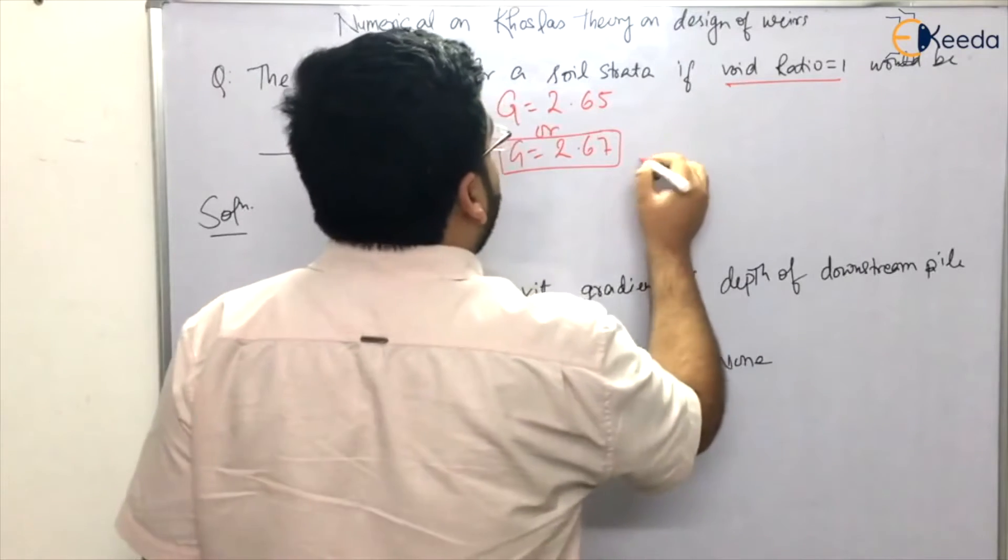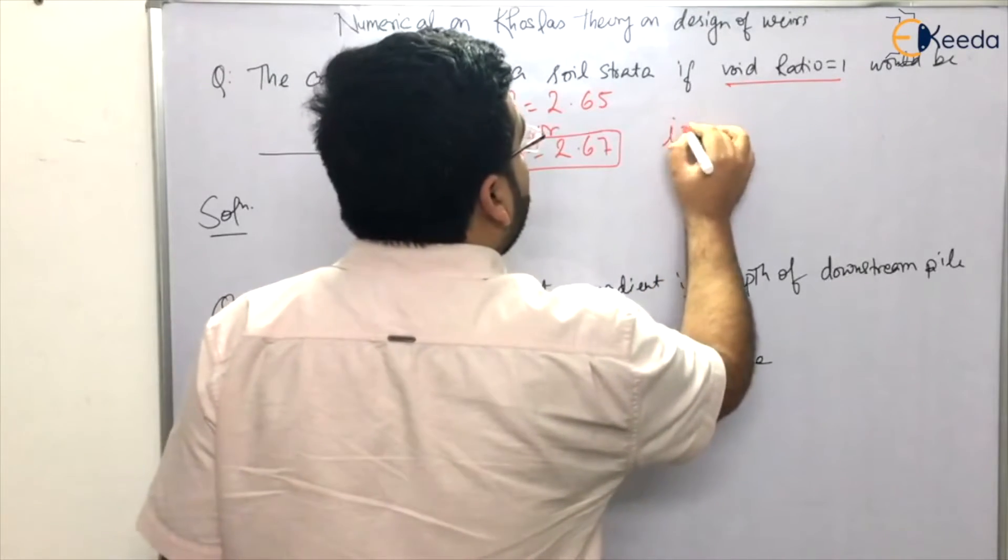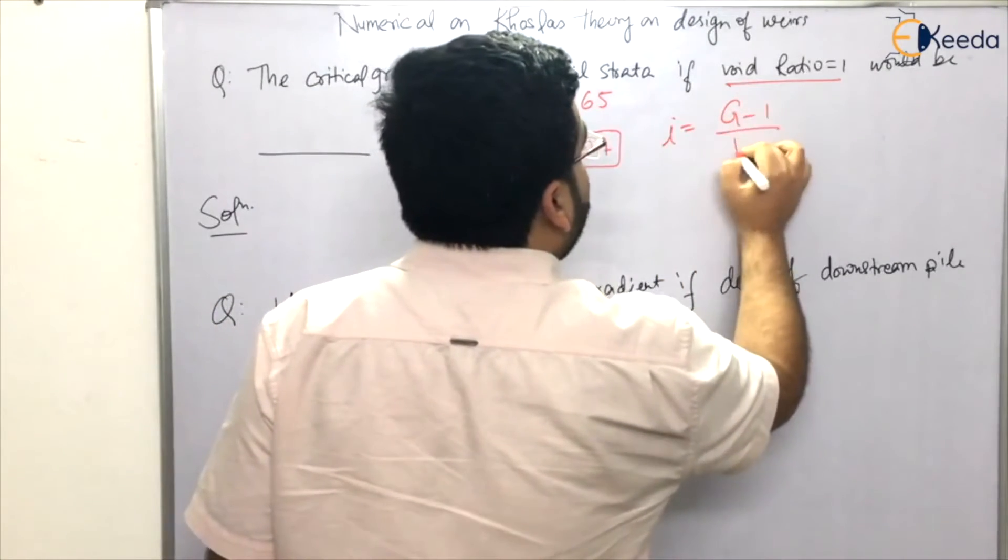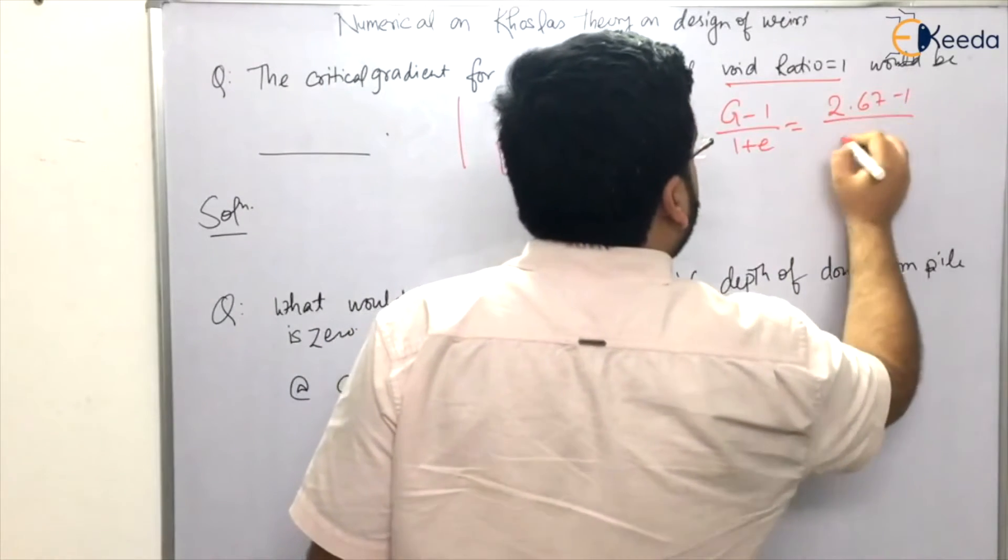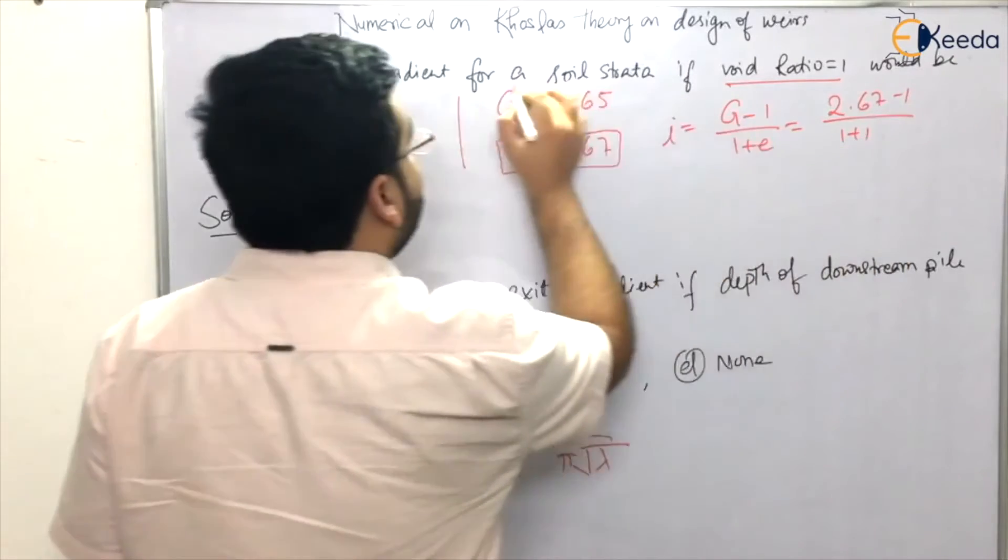So we will be taking 2.67. The exit gradient we know that is G minus 1 divided by 1 plus e. So how much is G? That is 2.67 minus 1, 1 plus 1 because e is given to us as 1.